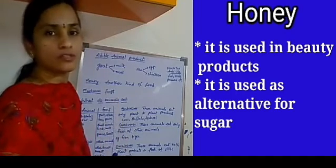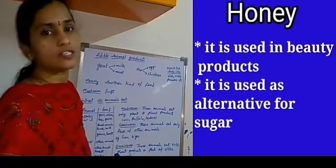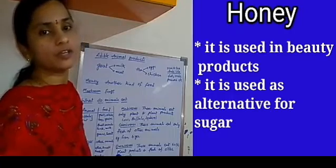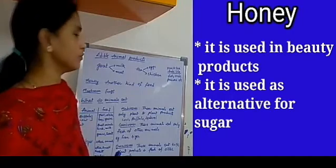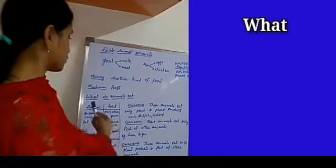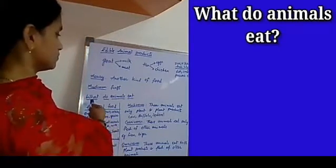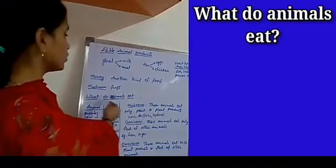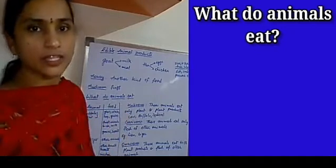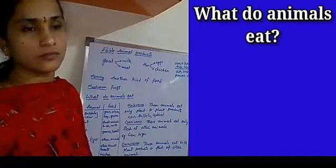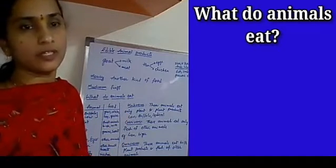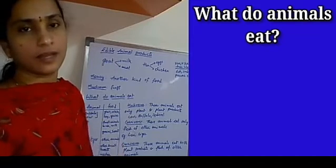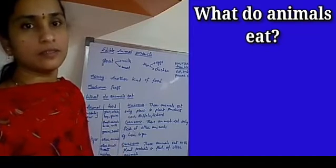Honey is also used as a sweetening agent. Instead of sugar, you can use honey. Next, what do animals eat? Just like what we eat, animals also eat plants and animals — the source of food is plants and animals.